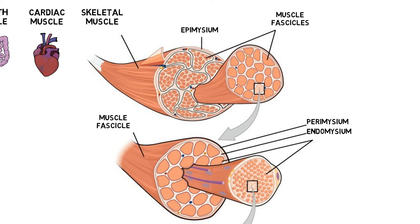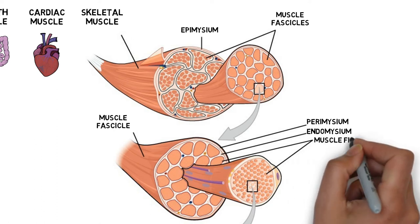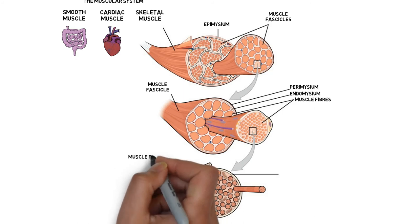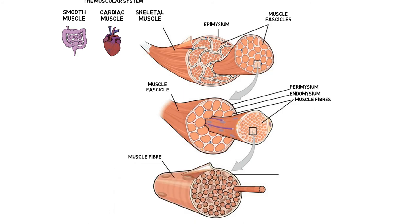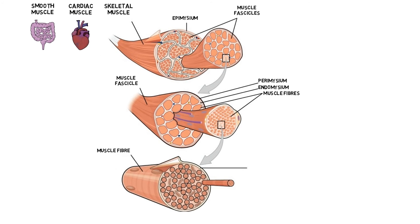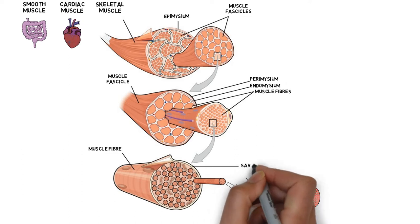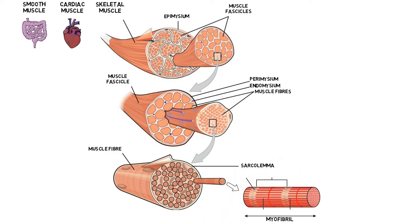Muscle fibres are elongated cells made up of numerous myofibrils. Myofibrils are cylinder-like structures that extend along the complete length of each muscle cell. And the sarcolemma, which is the cell membrane of a skeletal muscle fibre cell.